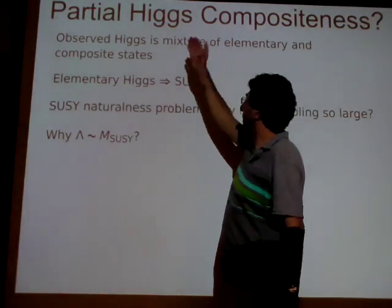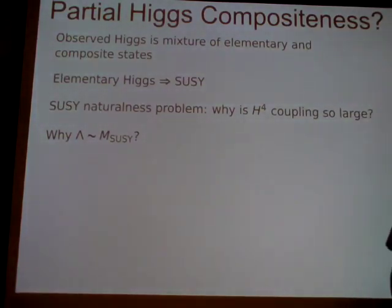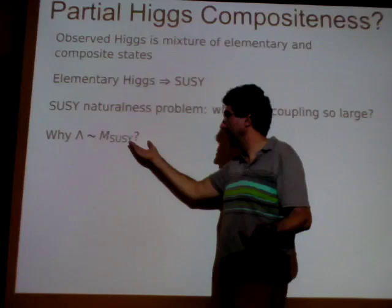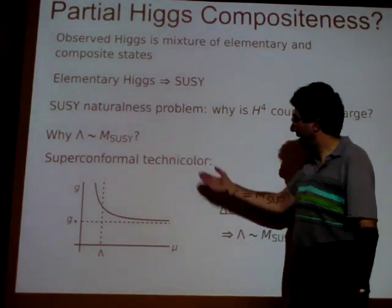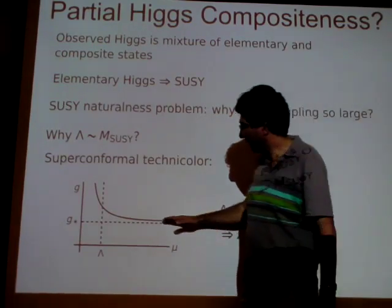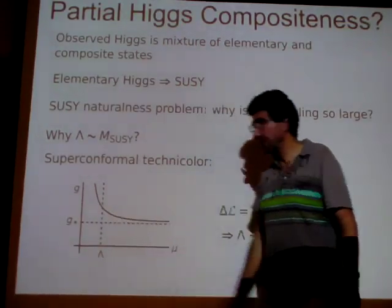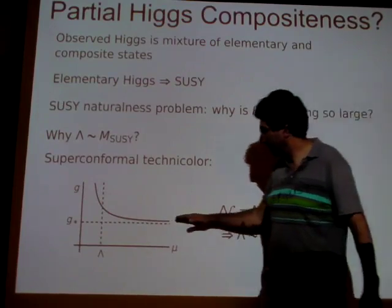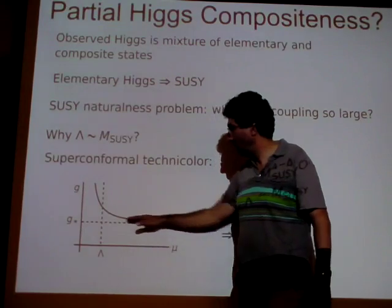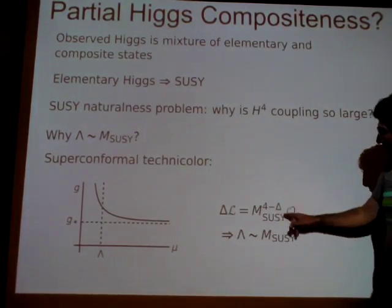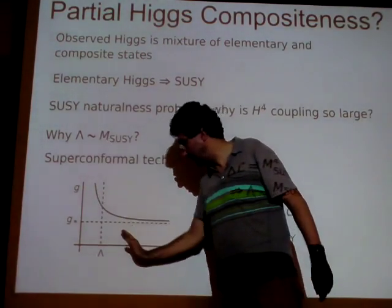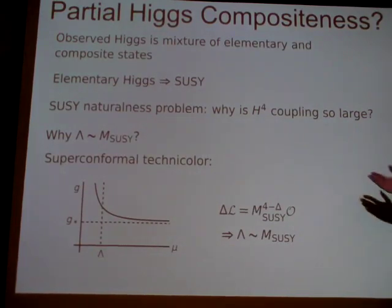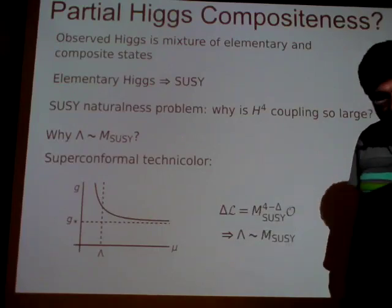If you have both supersymmetry and composite dynamics, you have to ask why they're both there at the same scale — the TeV scale. Isn't that just a coincidence? We can address that with superconformal technicolor: above the SUSY-breaking scale, the theory is at some strong fixed point with a gauge coupling that is large but doesn't run. Then SUSY breaking sets the scale for some relevant perturbations, and since the theory is already strong when this perturbation happens, it just breaks supersymmetry and gets strong right at the SUSY-breaking scale. So in this kind of model, there is no problem about why these scales are the same.